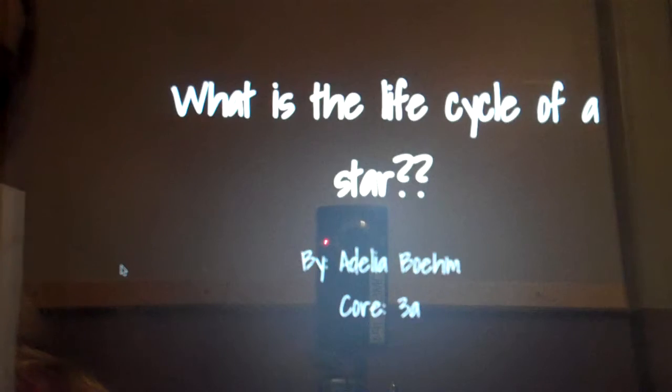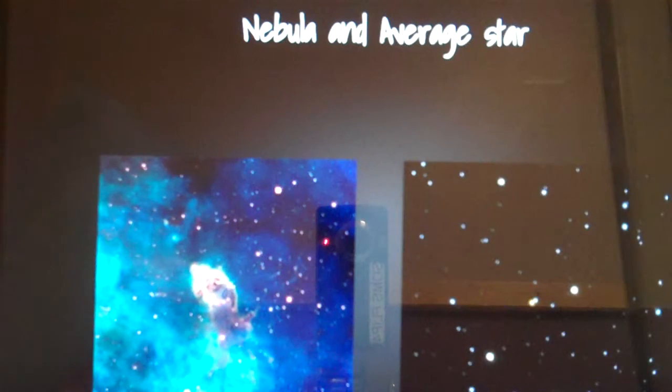What is the life cycle of a star? There are two paths a star can take. A small path, which starts off as an average star, and a bigger path, which starts off as a massive star.